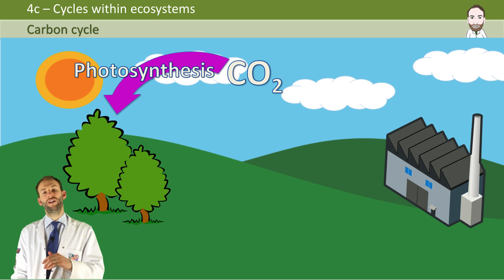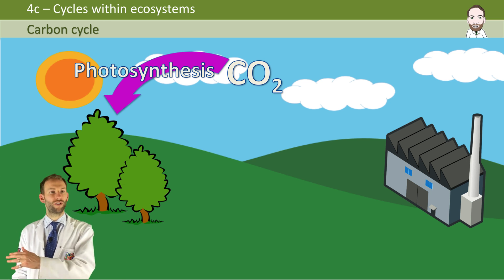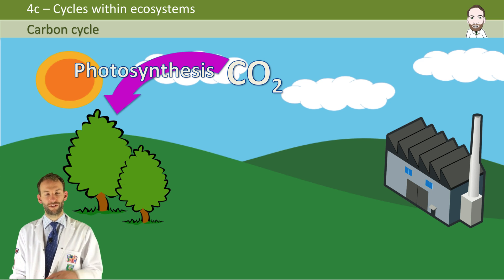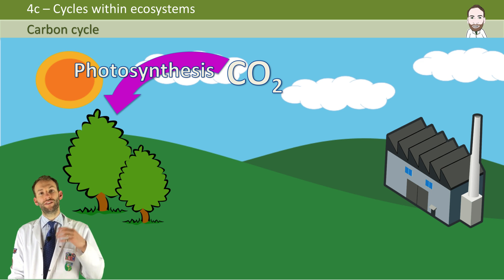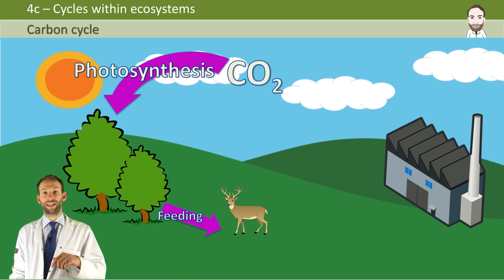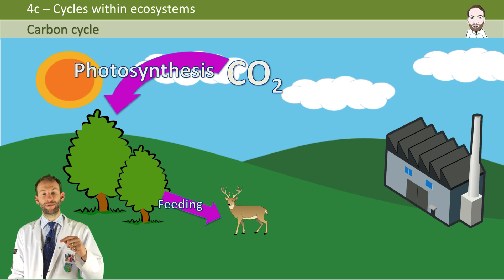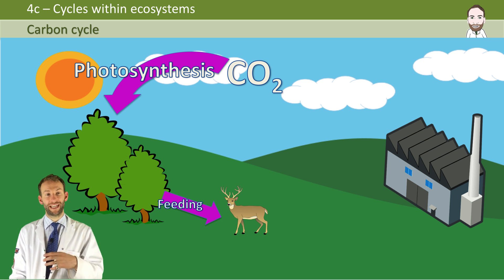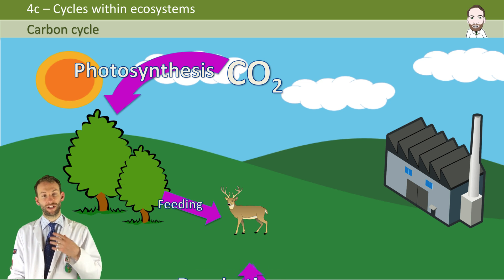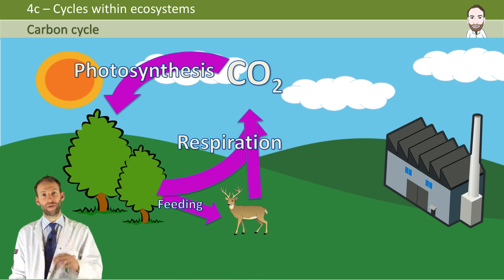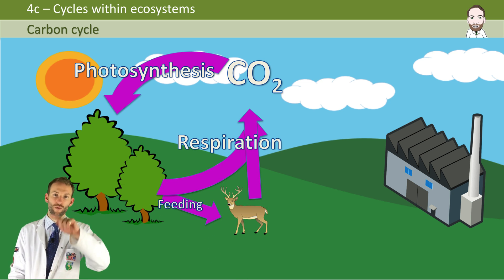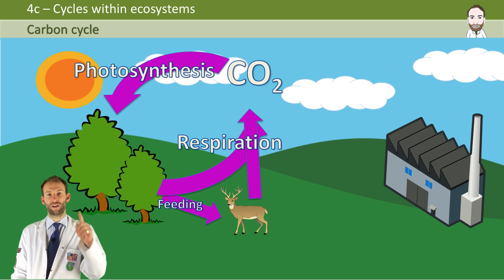That carbon can be passed along lots and lots of different food chains in the process of feeding. But then plants and animals actually return some of that carbon back to the atmosphere when they do respiration and breathe out carbon dioxide. So there's already a little cycle going on there.